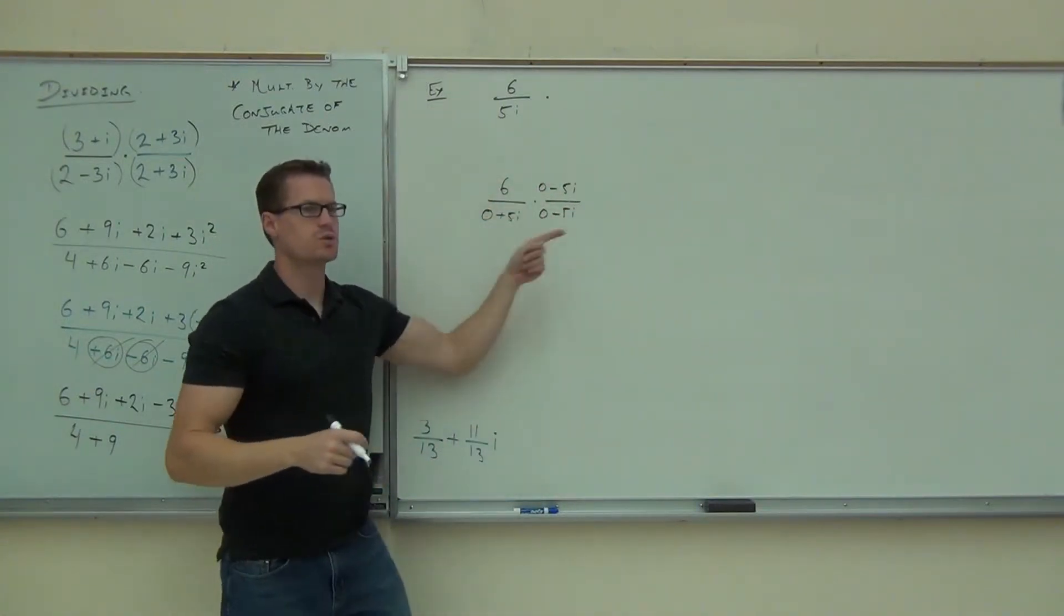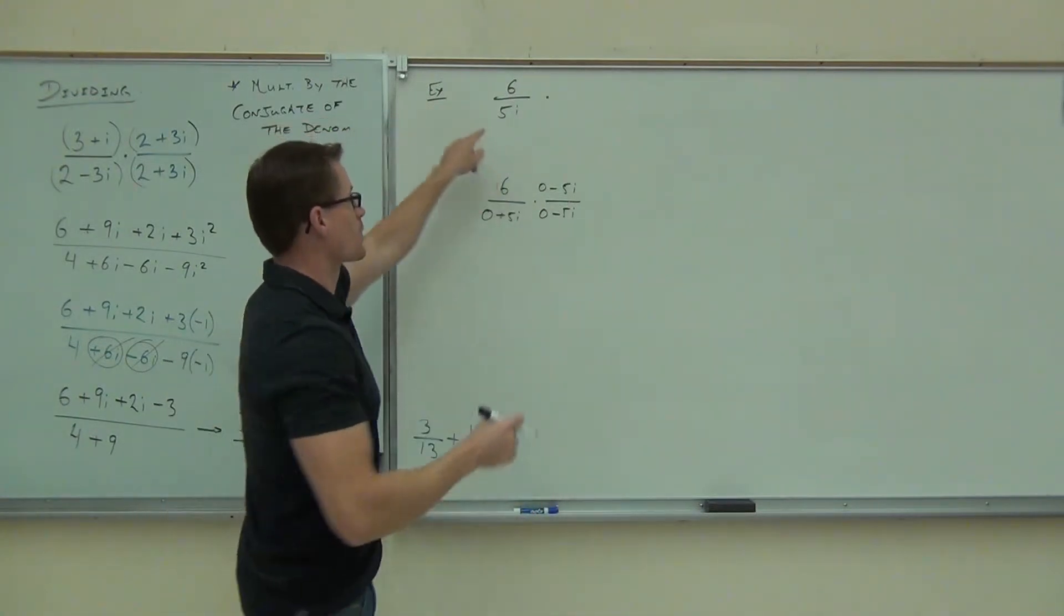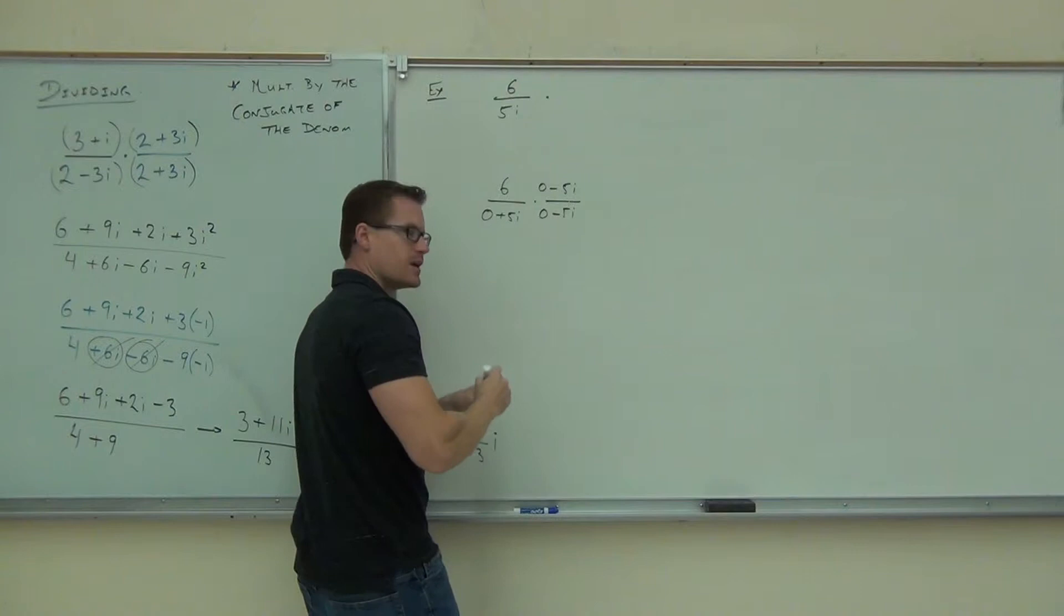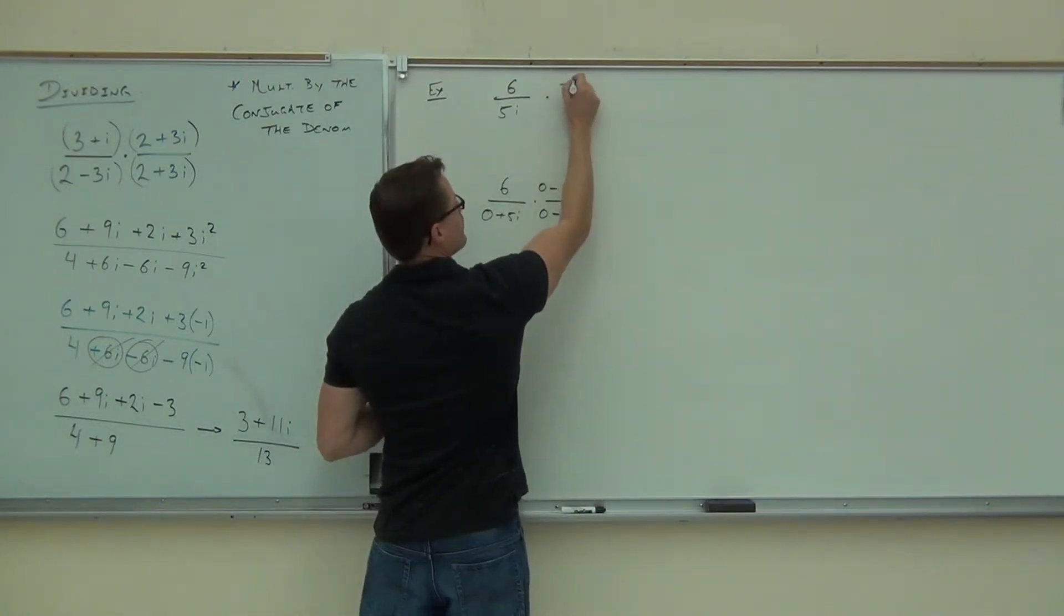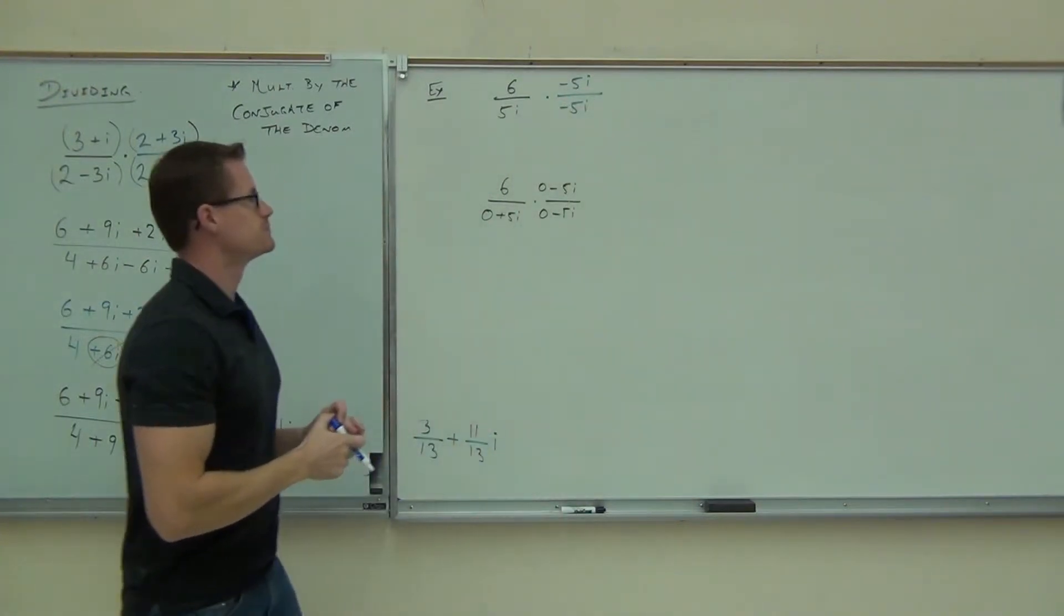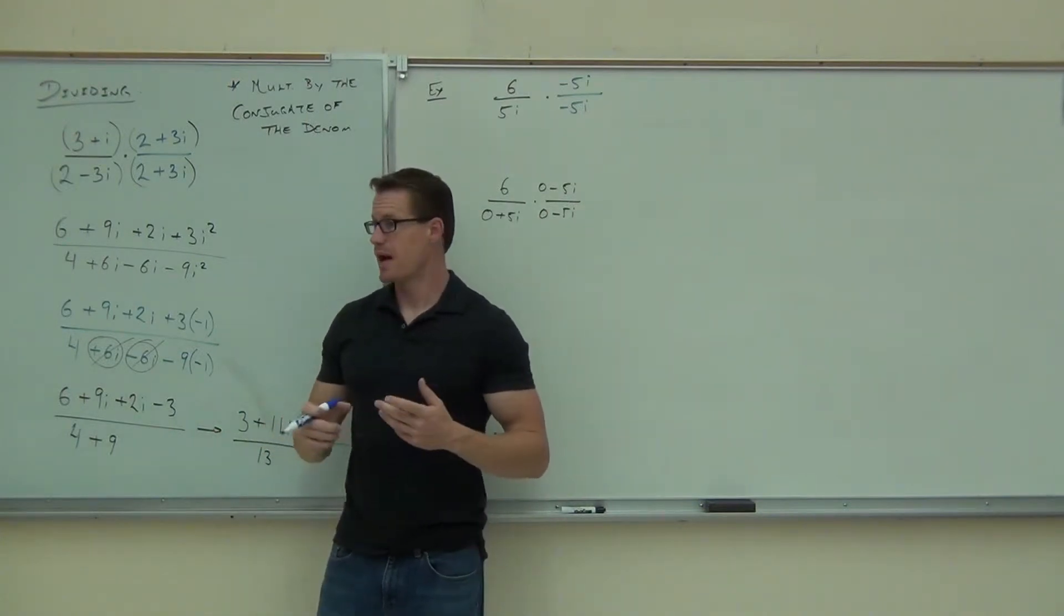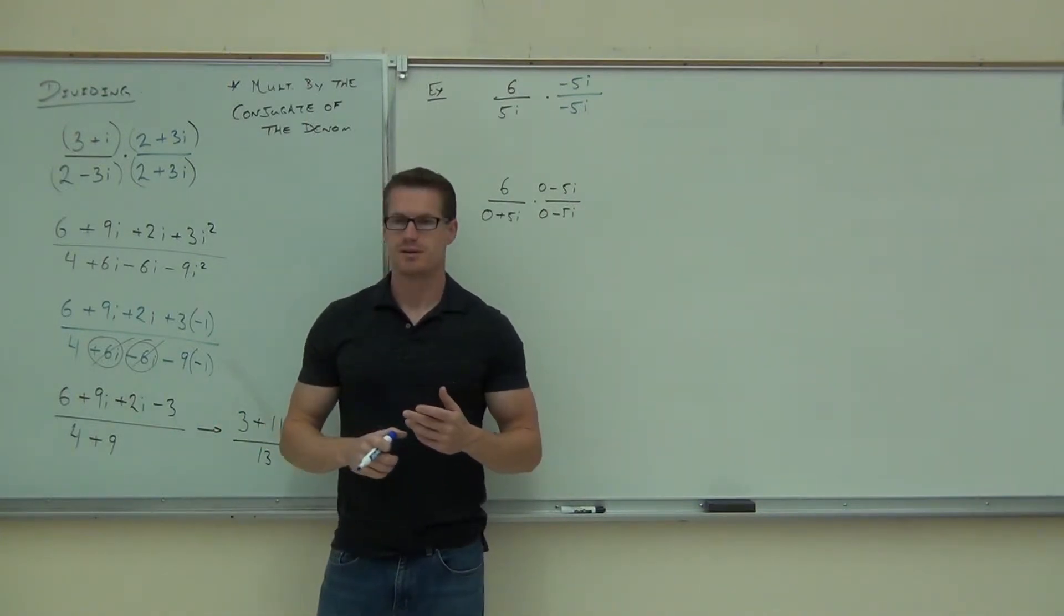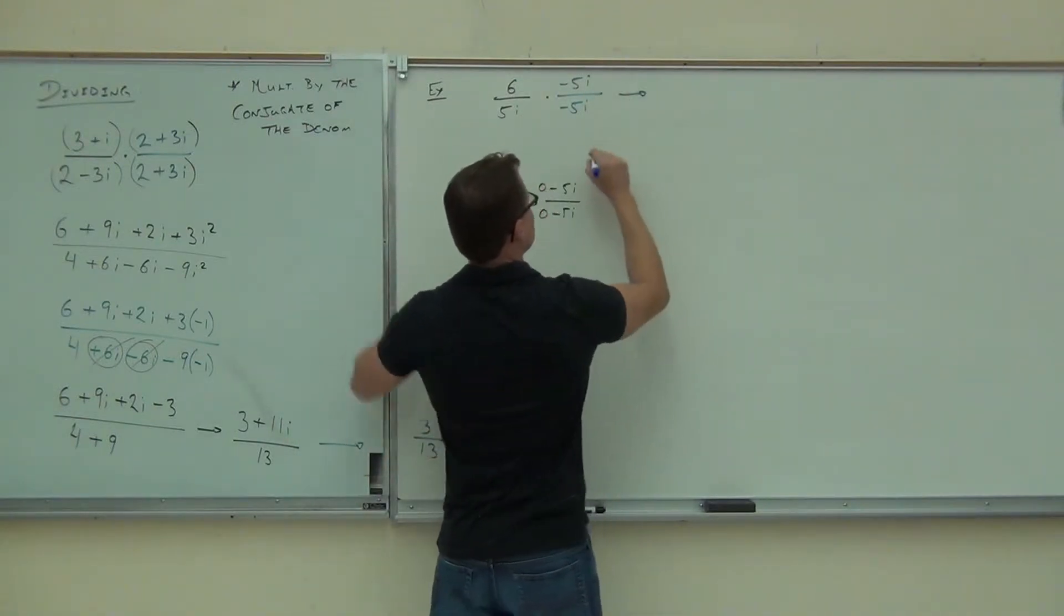Then our conjugate is supposed to be 0 minus 5i over 0 minus 5i. So basically, these 0s aren't doing anything. You just need to know if you're dividing by just an imaginary number, which we are here, the conjugate is just the opposite of that. It's 0 minus, so we're going to have the negative 5i over negative 5i. Ladies and gentlemen, are you all right with that one? Let's see what happens. Are you sure?